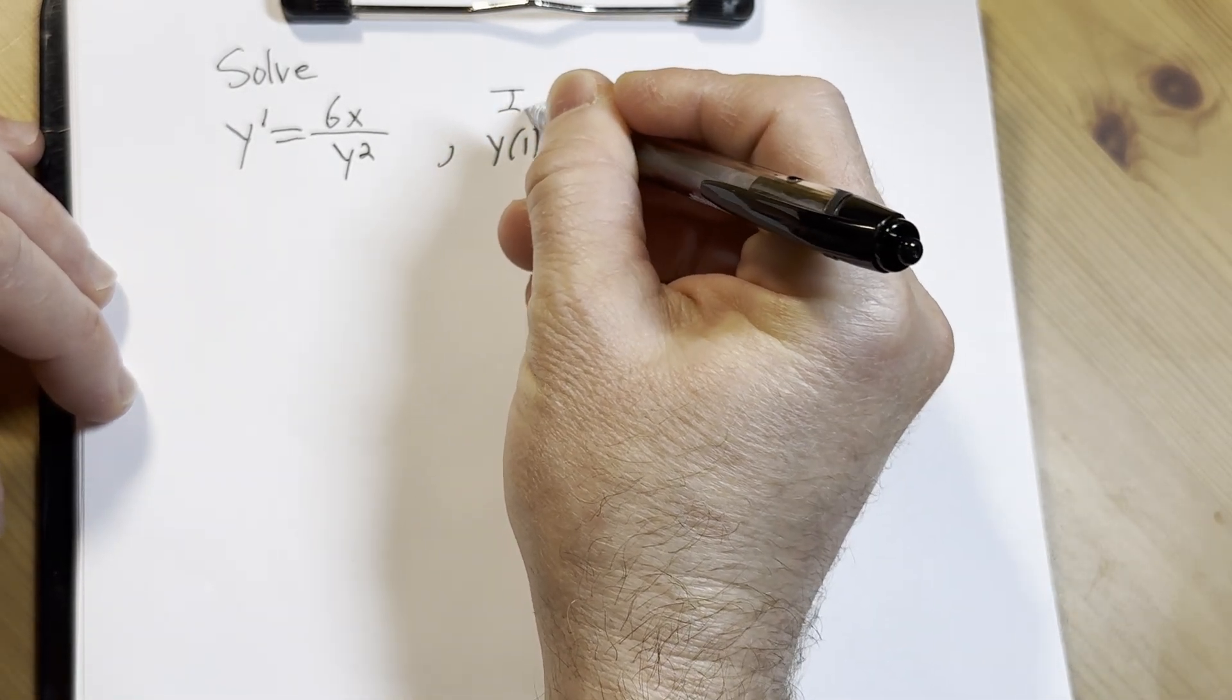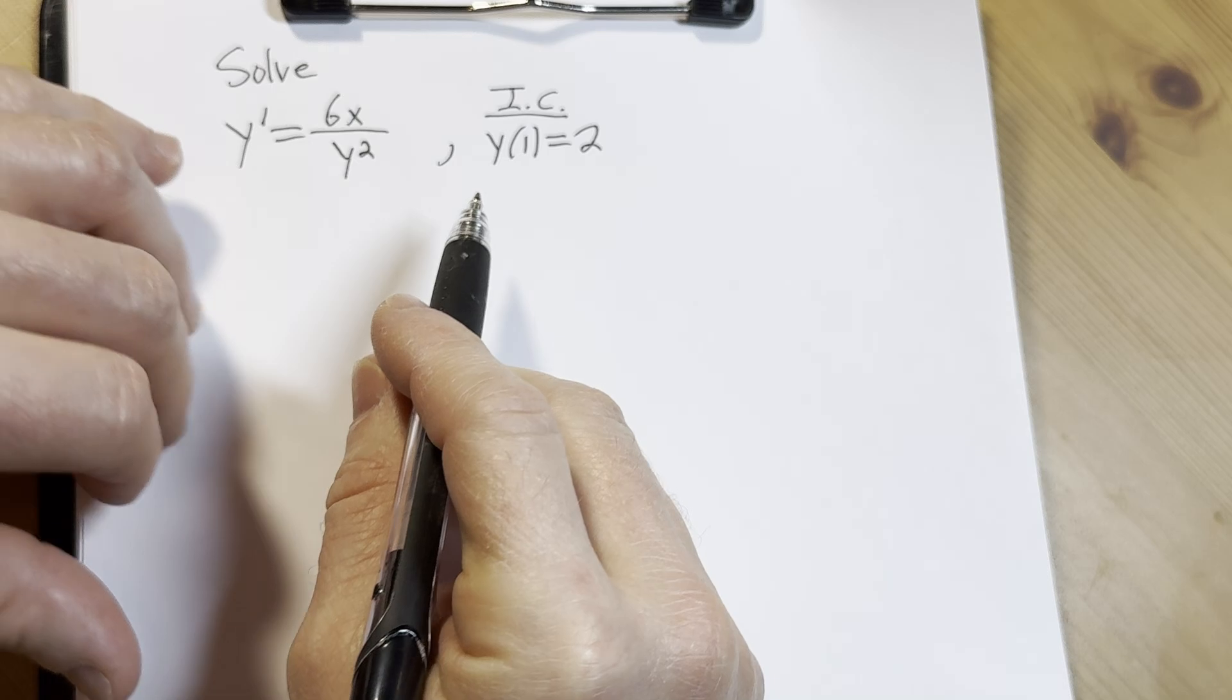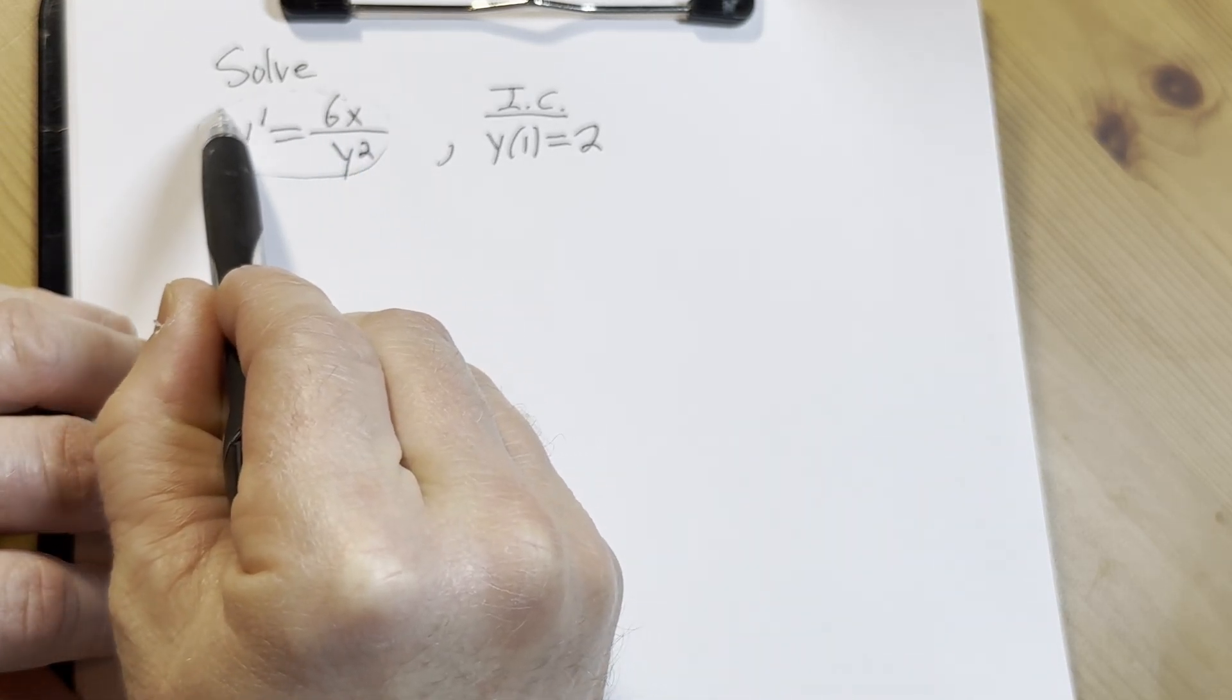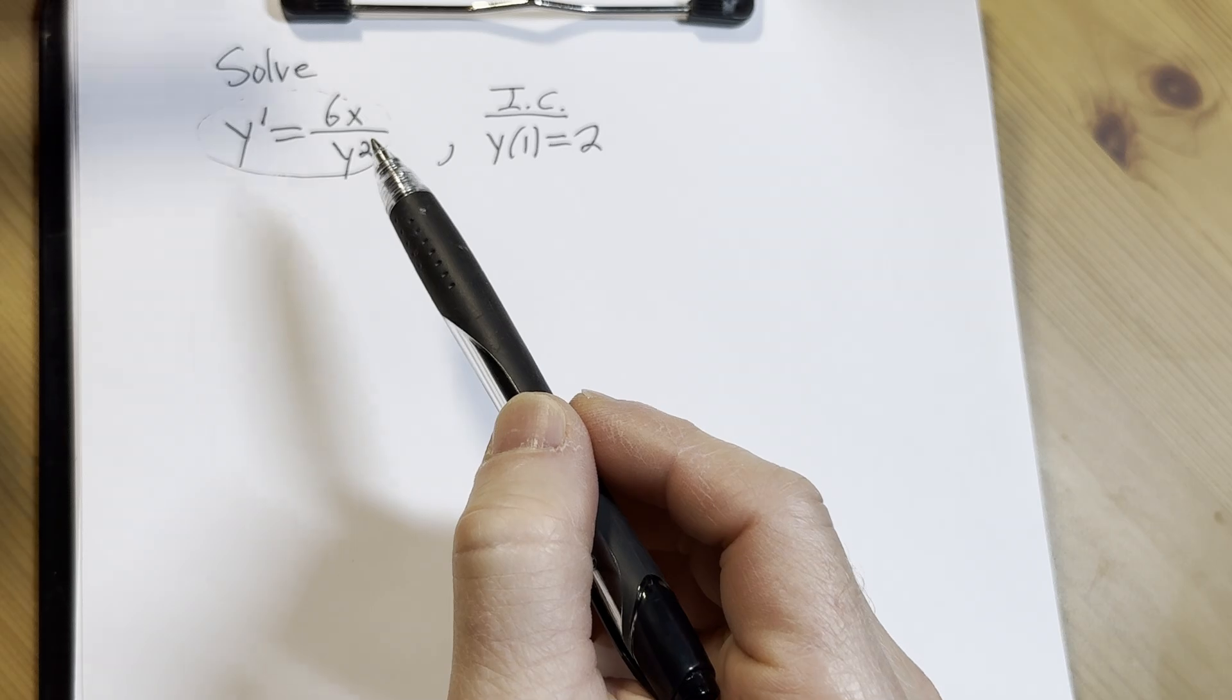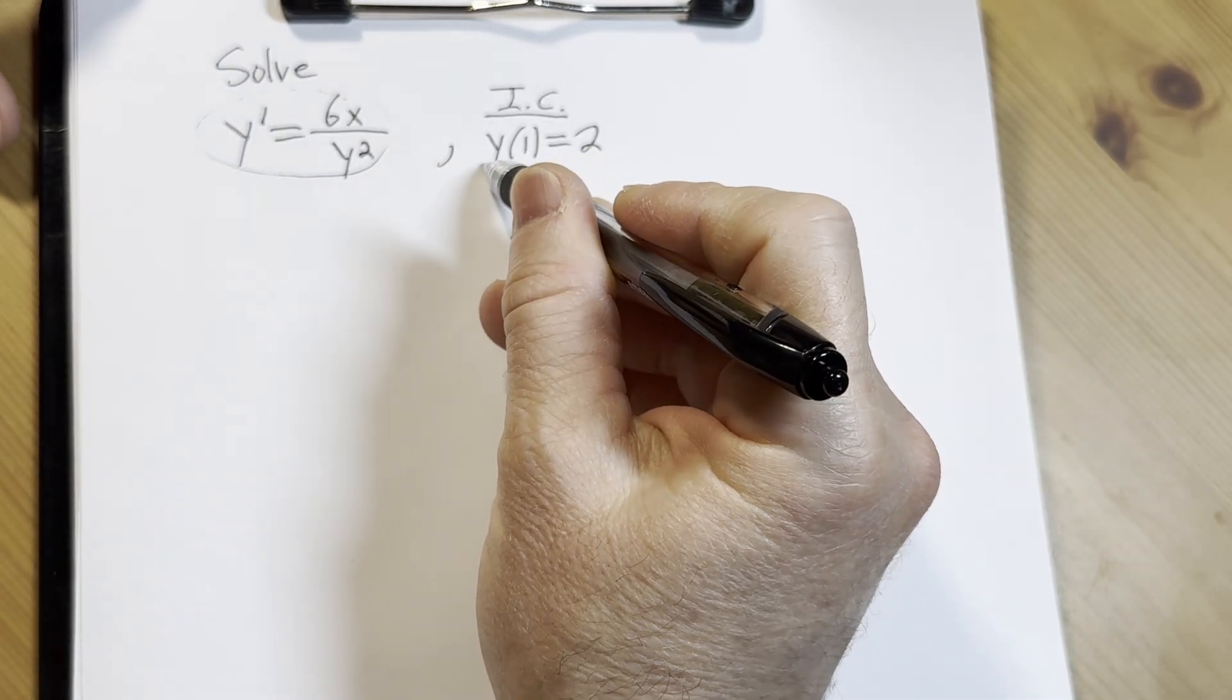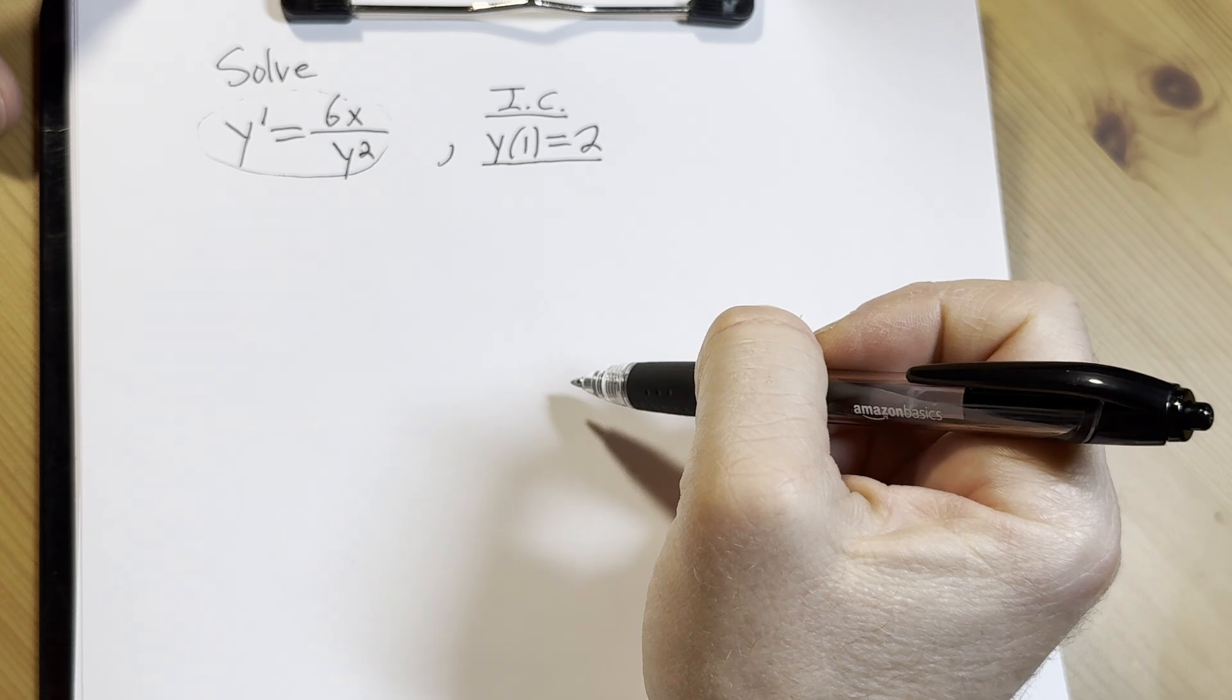This is called an initial condition. So what we're going to do is solve this differential equation and we're going to get an answer with a constant, capital C. Then we're going to use this condition to find the value of that constant.